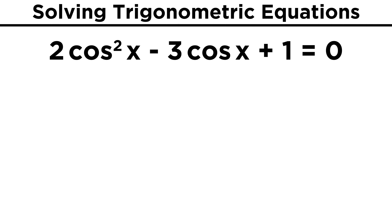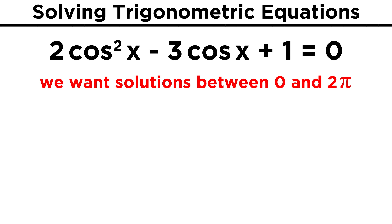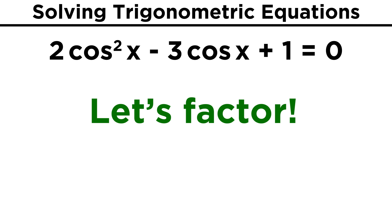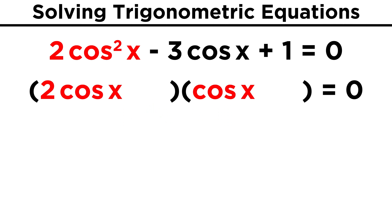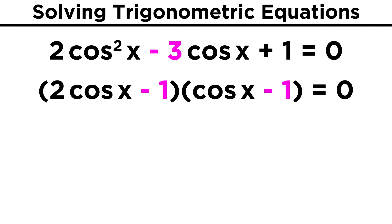Trigonometric equations get much more complicated than this. We can even see them in quadratic form. Take something like two cosine squared x minus three cosine x plus one equals zero, and we are just looking for answers in the interval from zero to two pi. It may look different than your typical polynomial, but we can factor this into binomials just like we normally would. We know we will need two cosine x here, and cosine x here. Then from there, the factors of one are either one and one, or negative one and negative one. Since this cosine term is negative, let's try the negatives, and that does indeed work out, since we get minus one cosine here, and minus two cosine there.